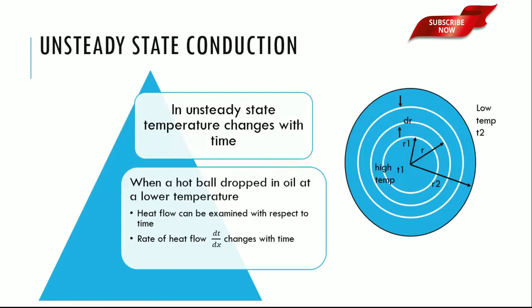After some time, the outer surface will start losing temperature. There will be a decrease in temperature when compared to the inner surface. The outer surface of the ball will lose temperature until it attains equilibrium. So in this, heat flow can be examined with respect to time. So the rate of heat flow dT by dx changes with time.